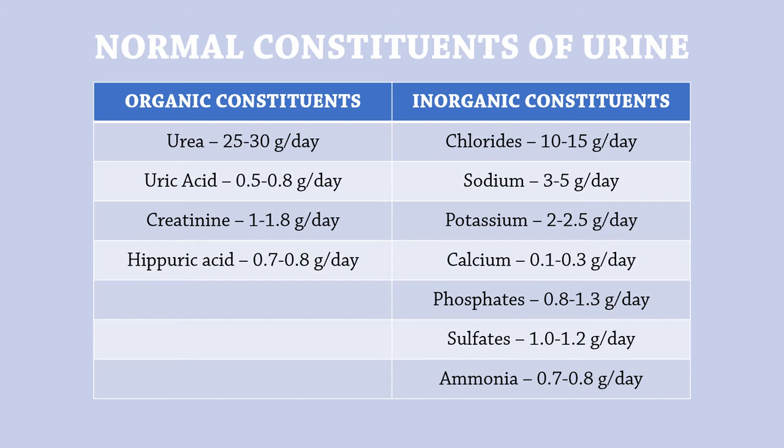In this sample, we can see the organic and inorganic constituents of urine and their normal range of output per day. The organic constituents are urea, uric acid, creatinine, and hippuric acid, while the normal inorganic constituents are chlorides, sodium, potassium, calcium, phosphates, sulfates, and ammonia.